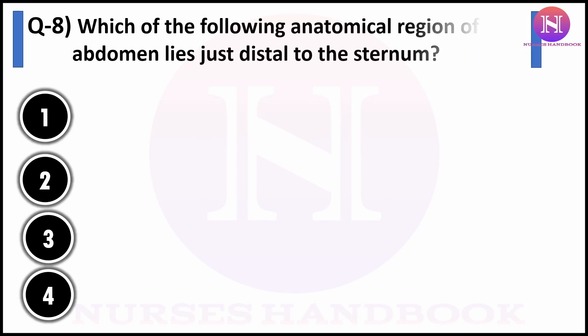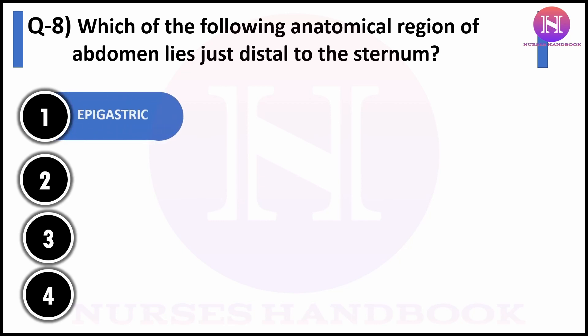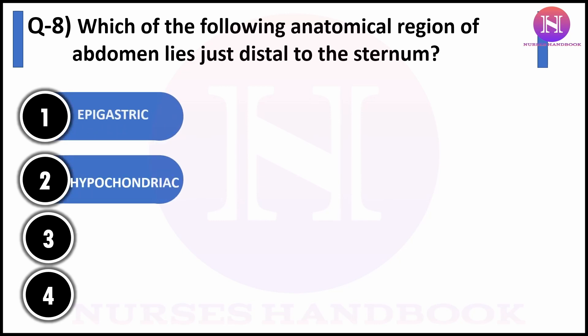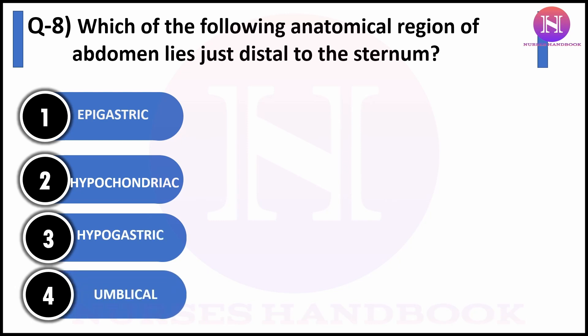Question number eight: which of the following anatomical regions of the abdomen lies just distal to the sternum? Option one: epigastric, option two: hypochondriac, option three: hypogastric, option four: umbilical. The correct answer is epigastric.